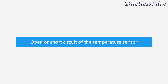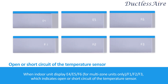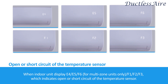Open or short circuits of the temperature sensor. When the indoor unit displays E4, E5, F6 (for multi-zone units only), F1, F2, or F3, this indicates open or short circuits of the temperature sensor.